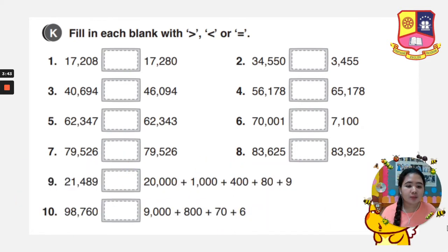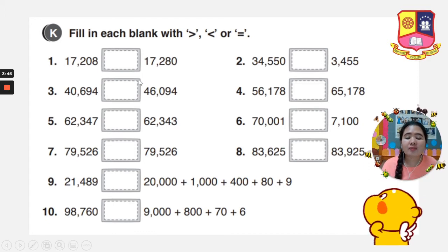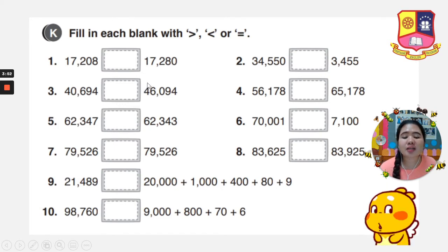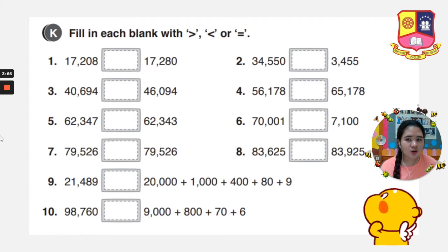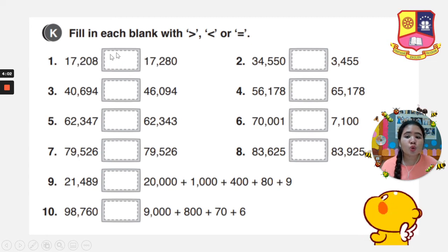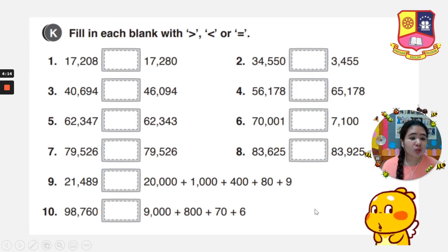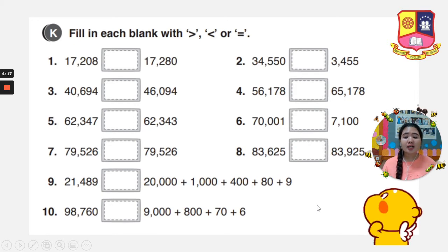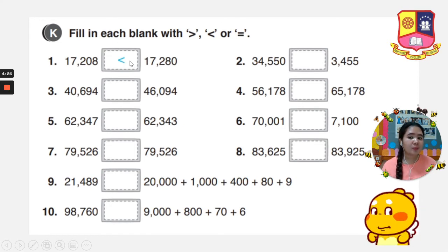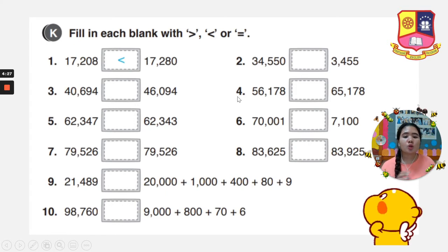Let's go to number 1. We have 17,208 and 17,280. Let's compare: 1 and 1, the same; 7 and 7, the same; 2 and 2, the same; 0 and 8 — which one is bigger? That is 8, so remember, the mouth is always at the bigger number. That is 17,280.